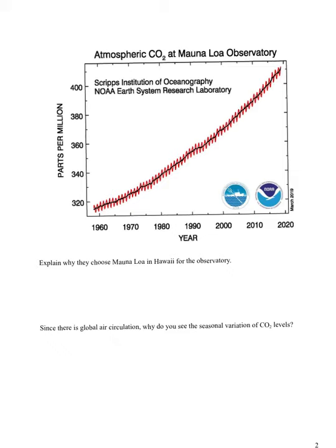We're going to look at this graph — this is a classic graph you see a lot. It's from Mauna Loa, Hawaii, which is on the Big Island, literally in the middle of the Pacific Ocean. They chose this location for a monitoring station because it's remote and up on a mountain, so it won't be impacted by industrial development, and the air currents in the middle of the ocean ensure good general air sampling.